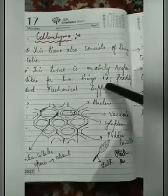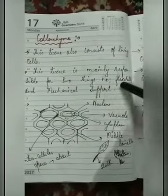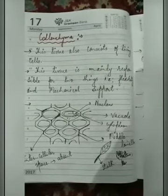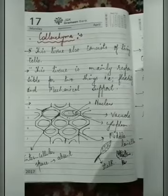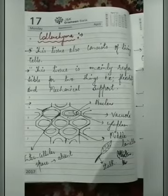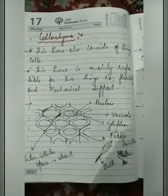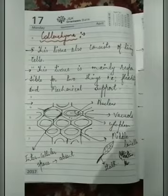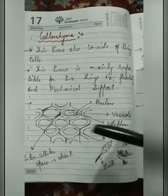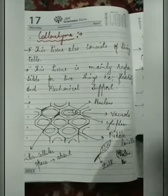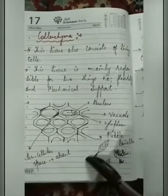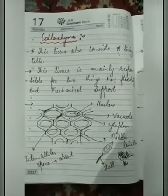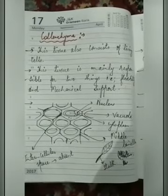Collenchyma is mainly responsible for flexibility and mechanical support, making it a mechanical tissue. During heavy rains or strong winds, this tissue helps the plant to bend without breaking. It is found in the stalks of leaves as well as in flowers.